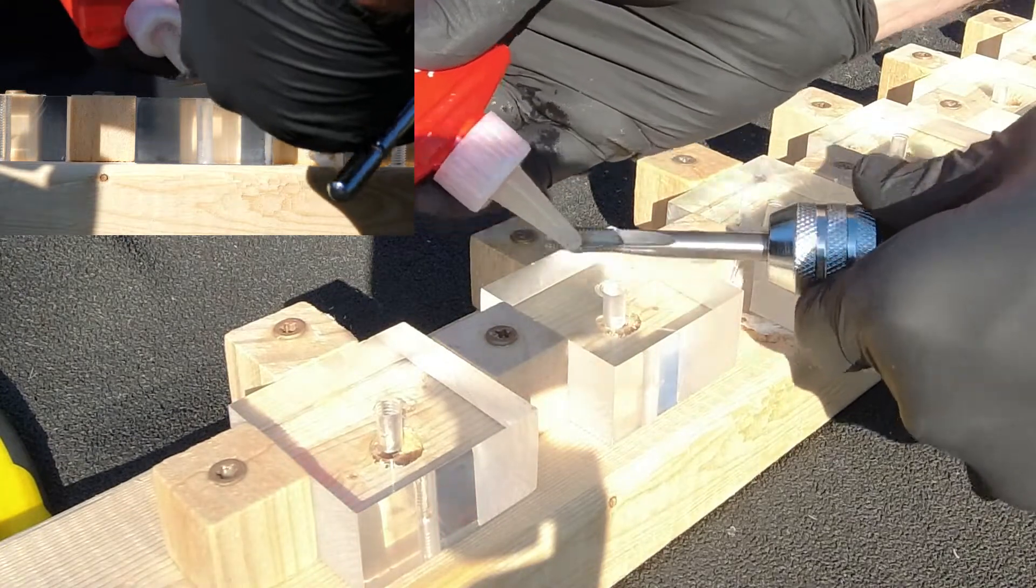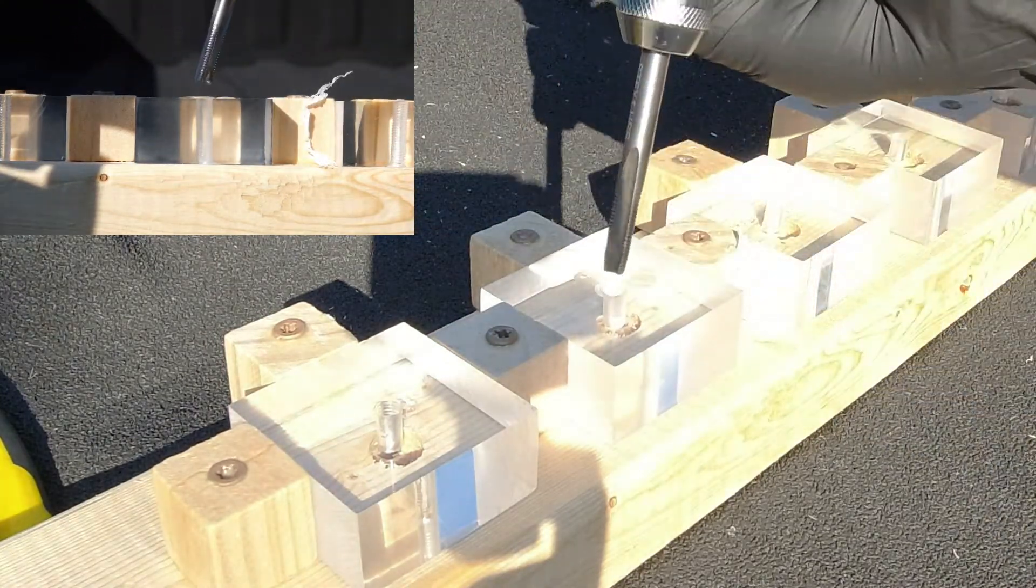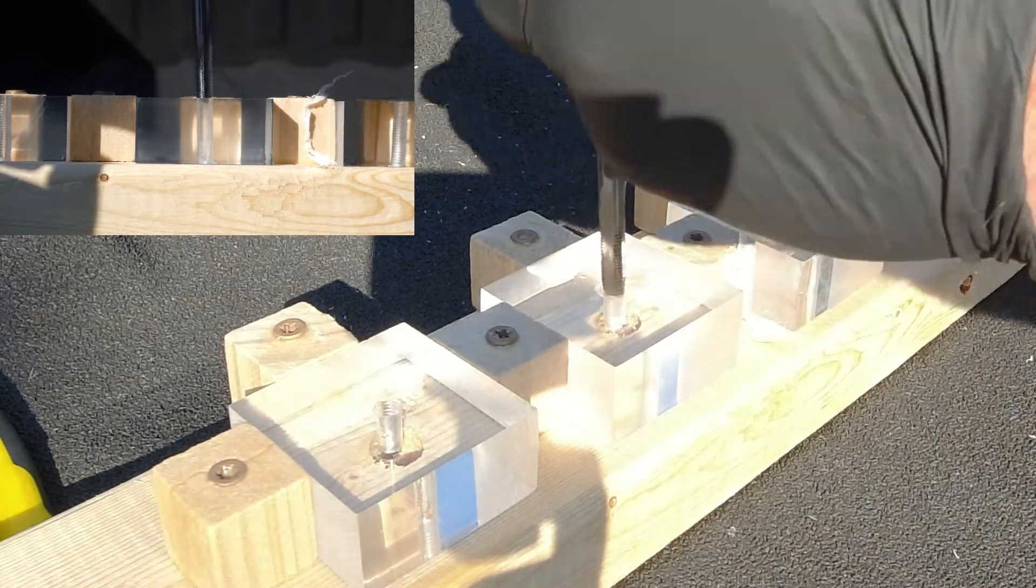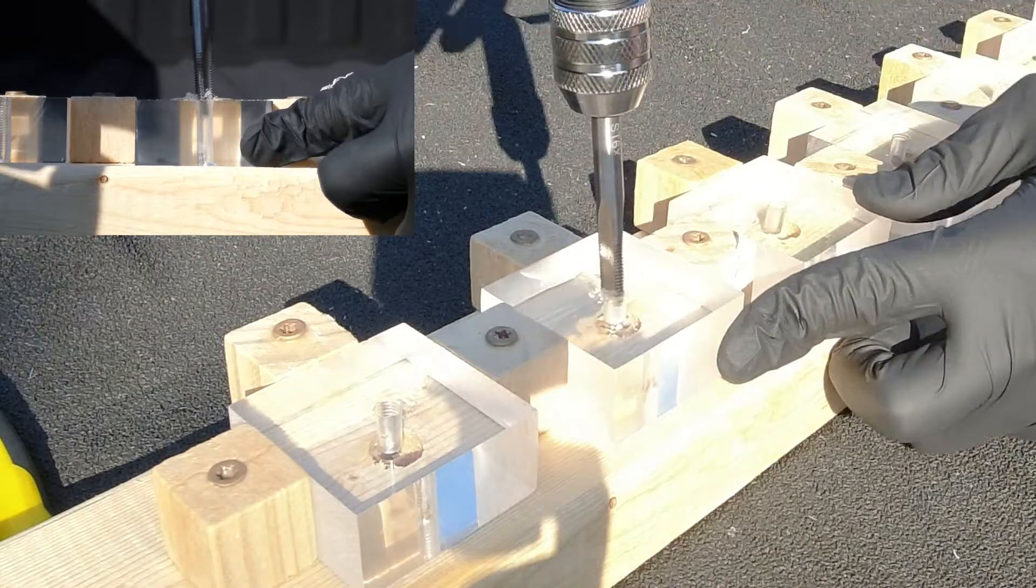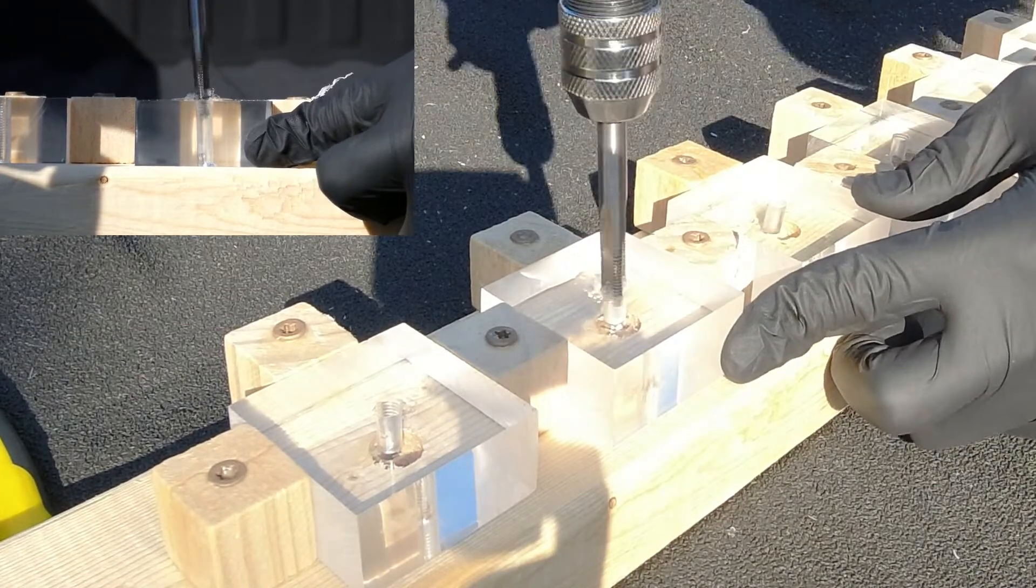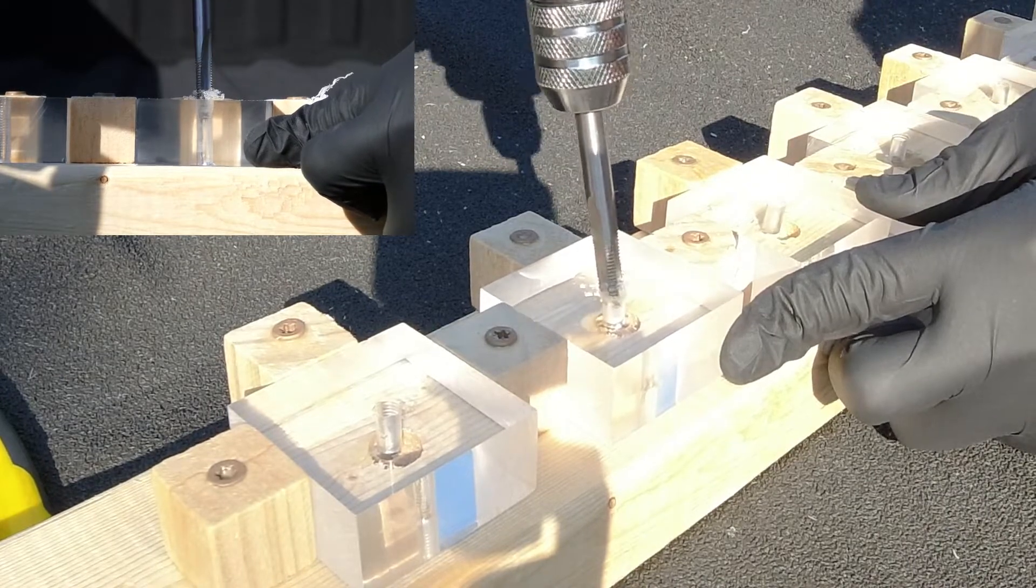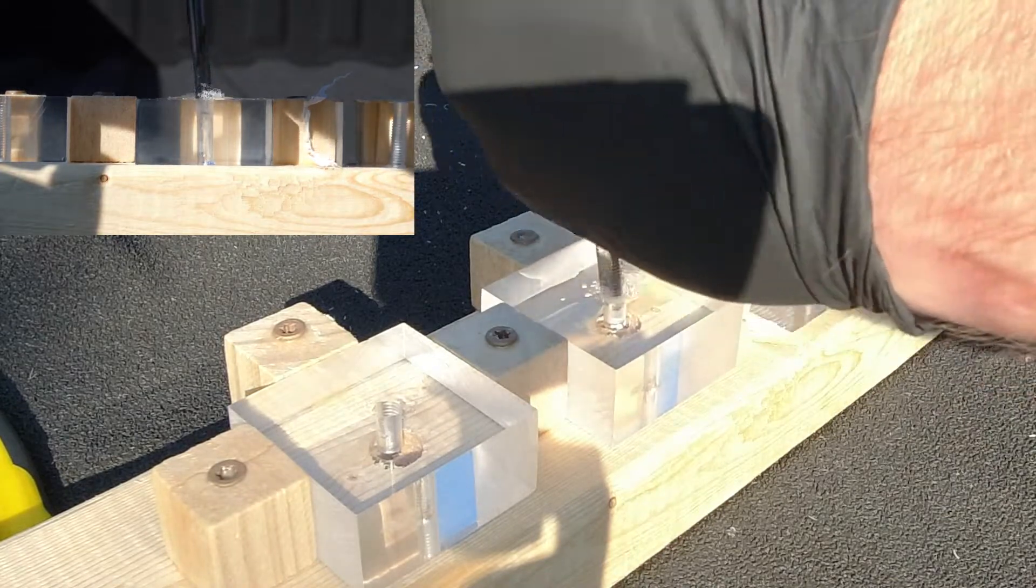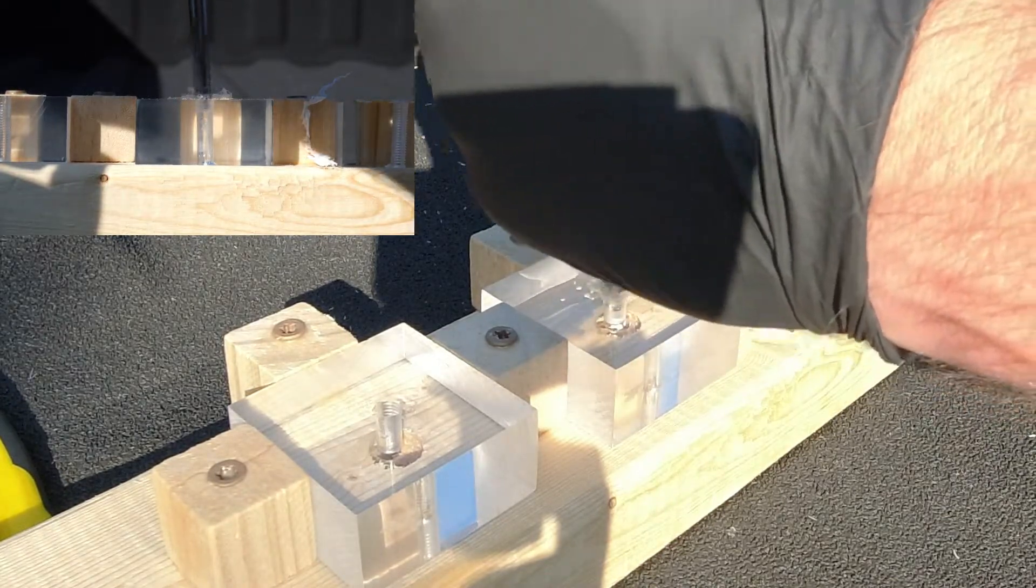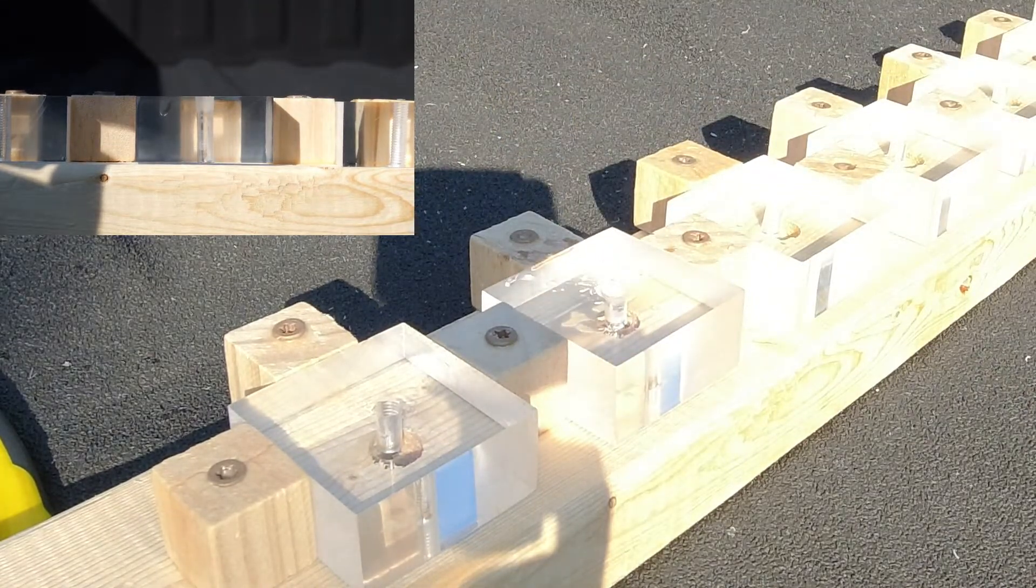Now let's grab the tap that came with it. We have a beautiful tap here that came with the set. We're going to add a little bit of cutting fluid. Anytime you tap anything, it's always good to have cutting fluid, no matter if it's plastic, aluminum, steel, doesn't matter. We're going to start doing this as straight as humanly possible. I'm kind of eyeballing this with cameras in the way, so bear with me. Now we're starting to cut it in. Feeling resistance, we're going to back out.